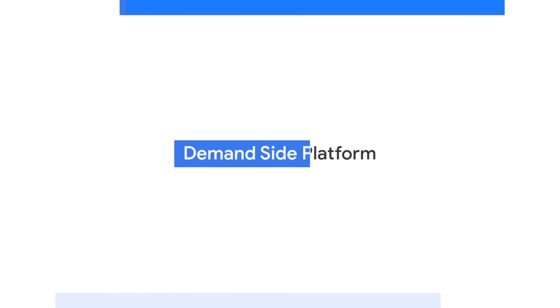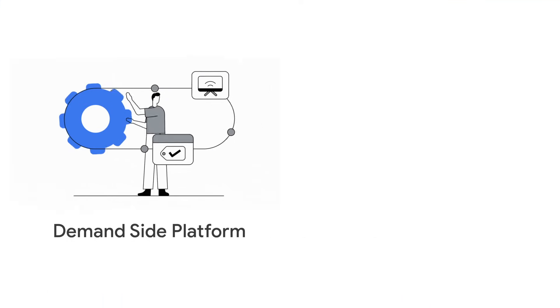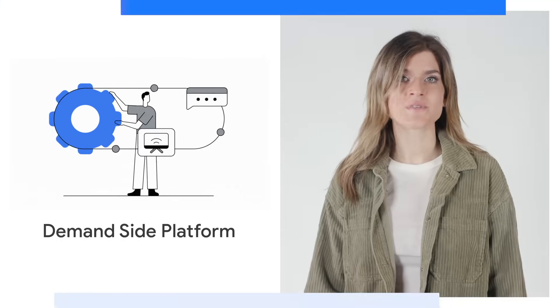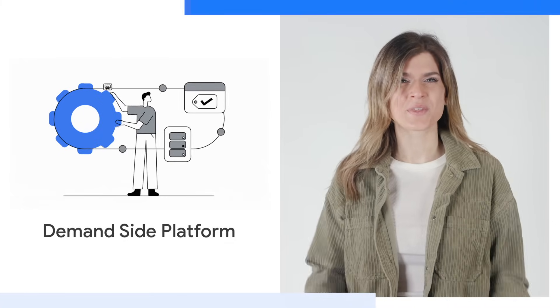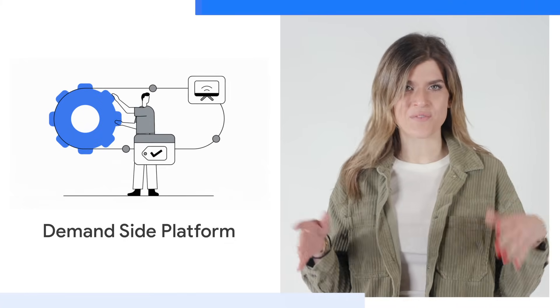Display & Video 360 is a demand-side platform, or DSP. A DSP is a type of software that lets you buy digital advertisements with the help and magic of automation. A DSP allows you to serve ads to the right audience in the right place at the right time by letting you set the rules for which users you're trying to reach and where you're trying to reach them.